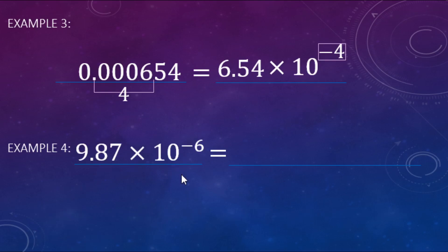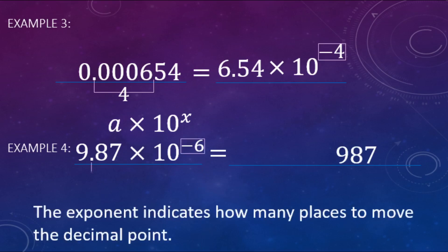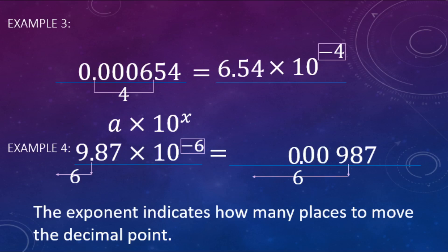Now 9.87 times 10 to the negative sixth — that negative sixth means millionths. We start with 9, 8, 7 in our number, and the exponent tells us how many places we're moving the decimal point over. It's a six, so we move it six places, and since it's negative, we go to the left, giving us a really small decimal number. We move it: one, two, three, four, five, six spots. So 0.00000987 is how we write that as a regular decimal number.